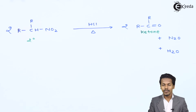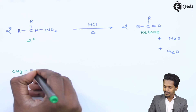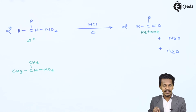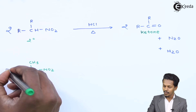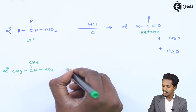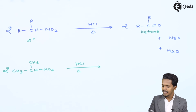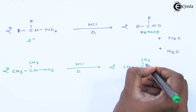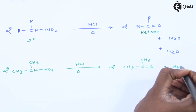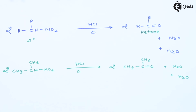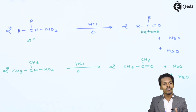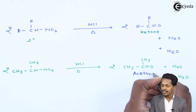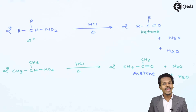For example, consider 2-nitropropane: CH3CH(NO2)CH3. Using 2 moles of 2-nitropropane in presence of HCl, the product we get is 2 moles of CH3C(=O)CH3, along with nitrous oxide and water as by-products. The main product is a ketone whose name is acetone. This is how we can convert 2-nitropropane to acetone.